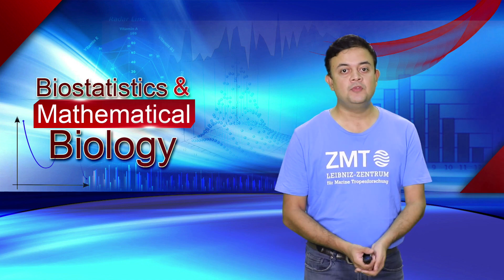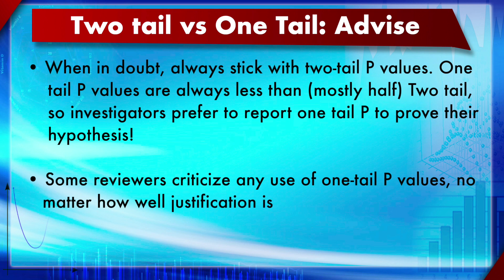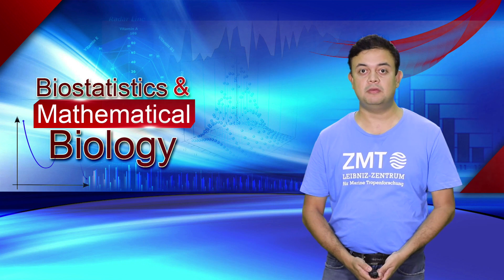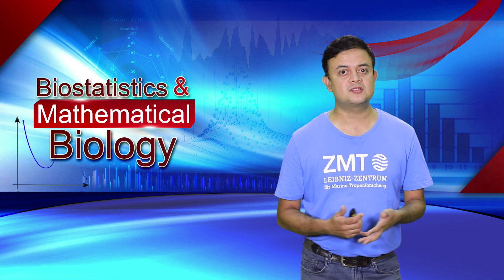The advice is: when in doubt, always stick with the two-tail p-value, because the two-tail p-value is almost twice that of the one-tail p-value. It is always safer and minimizes the chances of error — especially false positives will be minimized by sticking with two-tail. Some reviewers and statisticians criticize any use of one-tail p-values no matter how well justified, and whether to ban one-tail p-values altogether is a hotly contested topic in statistics.